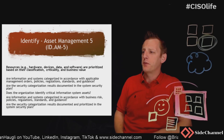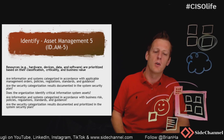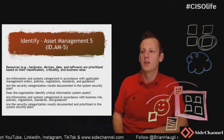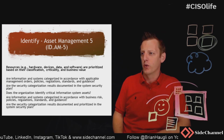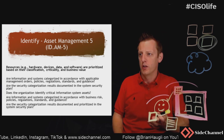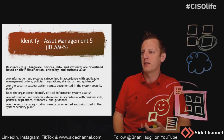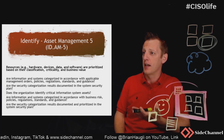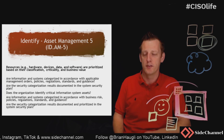Asset management control number five is an interesting one, probably one that gets glossed over a little too much. But are the resources — all of these types — are they prioritized based on their classification, criticality, and business value to the organization?